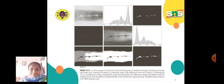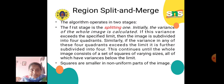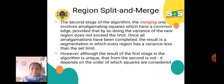Next is region split and merge. This algorithm operates in two stages: the first stage is splitting and the second is merging. Initially, the variance of the whole image is calculated; if this variance exceeds the specified limit, the image is subdivided into 4 quadrants. Similarly, if the variance of any of these 4 quadrants exceeds the limit, it is further subdivided. This continues until the whole image consists of a set of squares of varying sizes, all of which have variances below the limit.